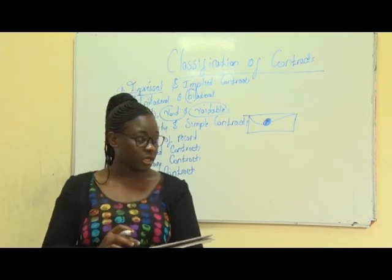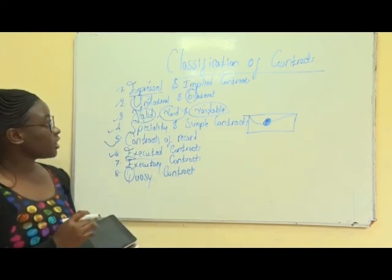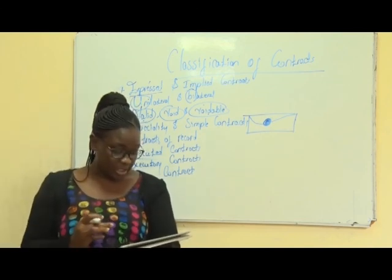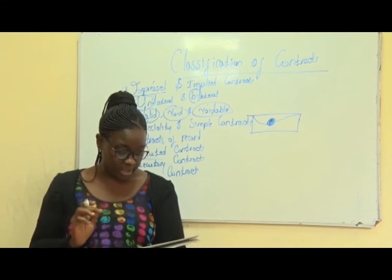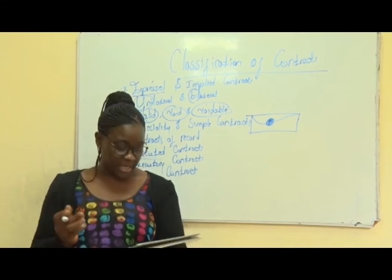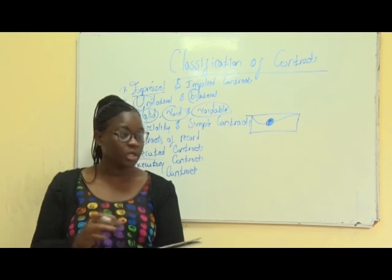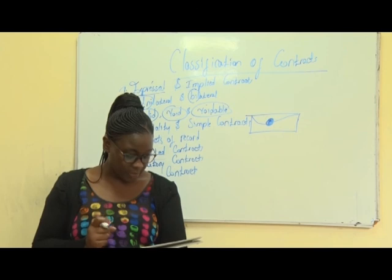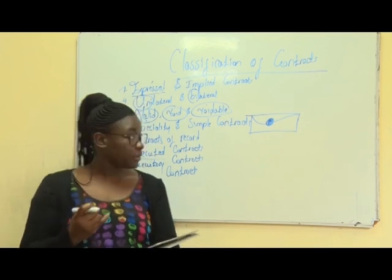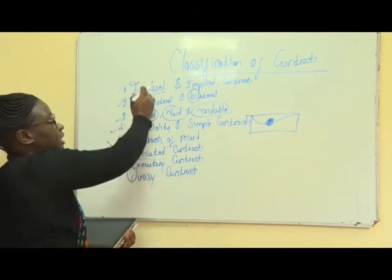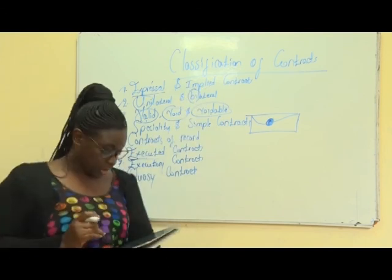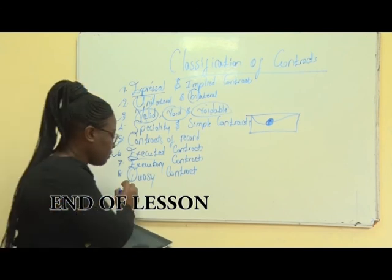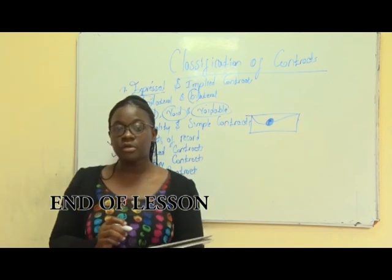Lastly, we look at quasi contracts. This is a type of contract that has little affinity with a true contract — like a quasi-partner who does nothing and whose name is only used. Such a contract does not arise by virtue of any agreement, expressed or implied. It is like a dormant partner. So that's all for the classification of contracts.